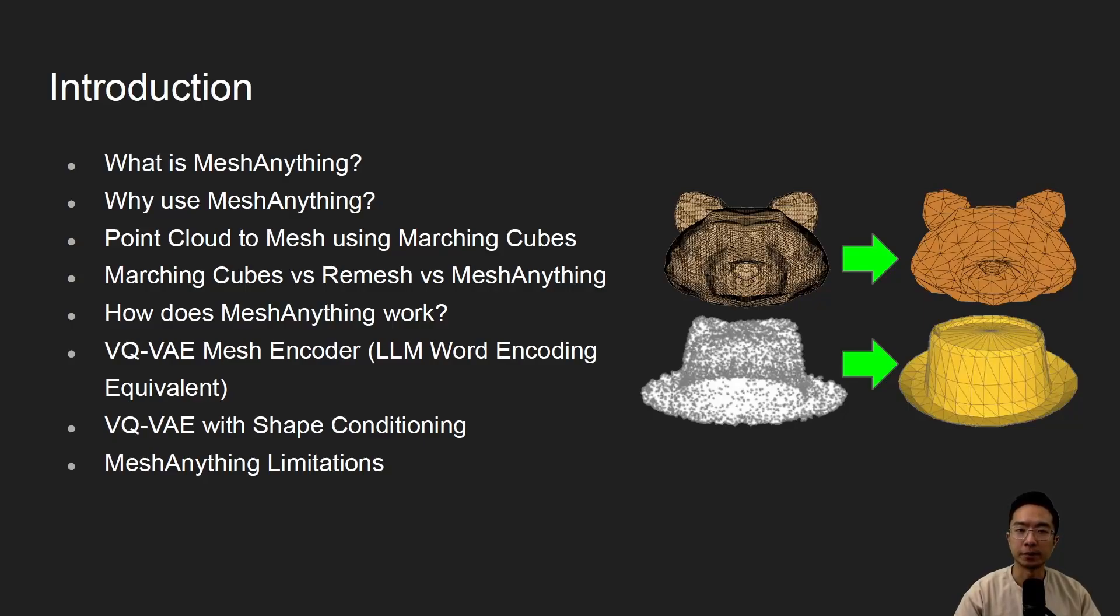In this video, I will be talking about the Mesh Anything model. I'll start off by talking about what is Mesh Anything, why use Mesh Anything, go over Point Cloud to Mesh using Marching Cubes, talk about some of the differences between Marching Cubes, Remesh, and Mesh Anything, go over how Mesh Anything works, talk about the VQ-VAE encoder, go over the shape conditioning, and then finally end it off with some of the limitations with Mesh Anything.